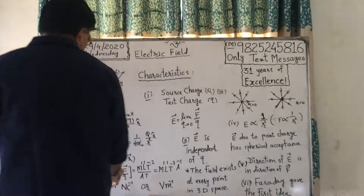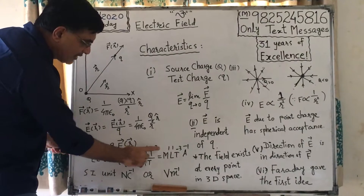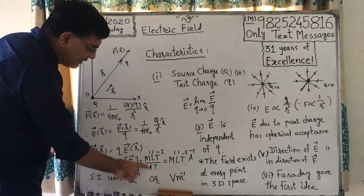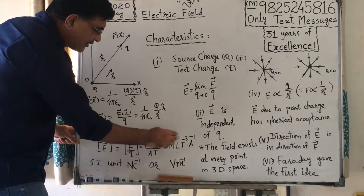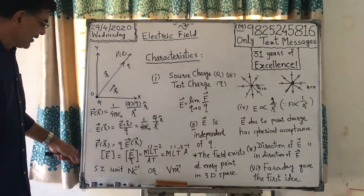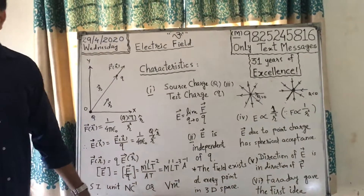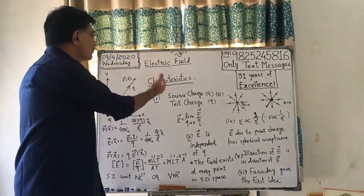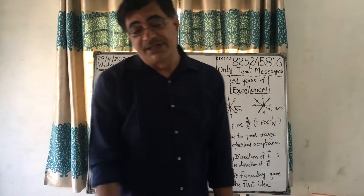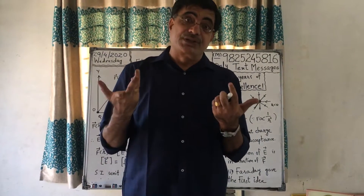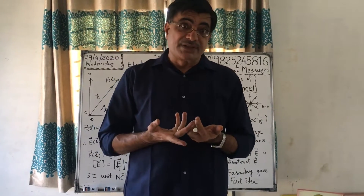Now, what will be its dimensional formula? Force is M¹L¹T⁻², charge is ampere × time, so finally it is M¹L¹T⁻³A⁻¹. Its unit is newton per coulomb or volt per meter. Now, today's topic: what are the characteristics of electric field intensity — the special things about electric field intensity or electric field.